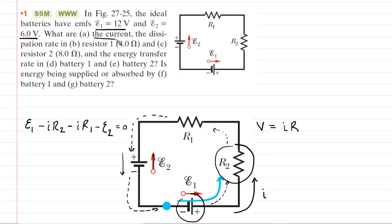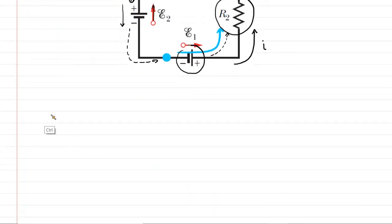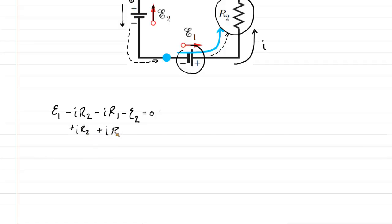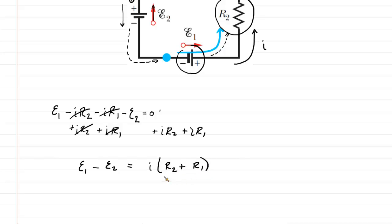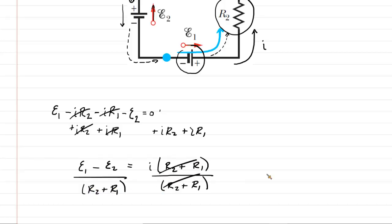Once you return to the starting point, you set all potential changes equal to zero. In part A, our job is to find the current I. We add IR2 and IR1 to both sides of the equation, giving us EMF1 minus EMF2 equals the current multiplied by the sum of the resistances. Factoring out the current and dividing both sides by (R1 + R2) gives us an expression for the current.